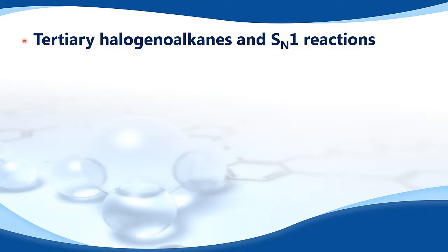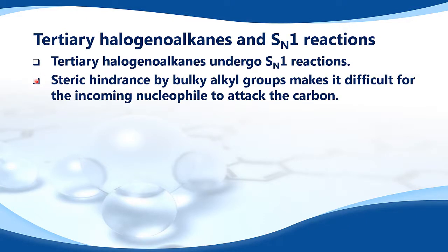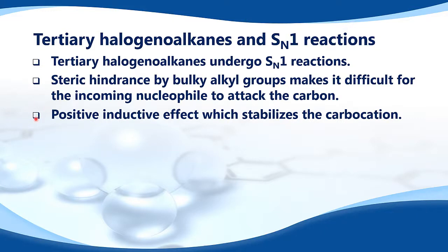Tertiary halogenoalkanes undergo SN1 reactions. The reasons for this are: first, steric hindrance — bulky alkyl groups make it difficult for the incoming nucleophile to attack the carbon. Second, the positive inductive effect, which stabilizes the carbocation.